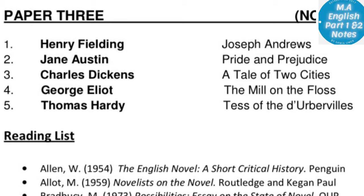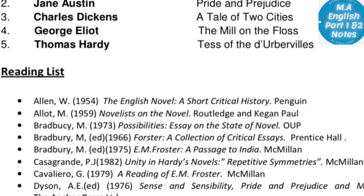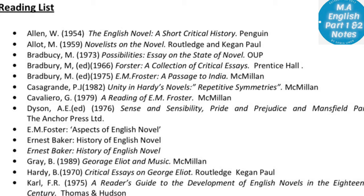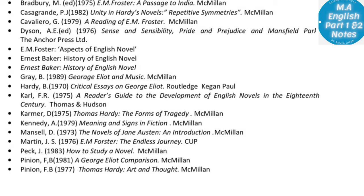The third paper is of Novel: Joseph Andrews by Henry Fielding, Pride and Prejudice by Jane Austen, A Tale of Two Cities by Charles Dickens, The Mill on the Floss by George Eliot, and Tess of the d'Urbervilles by Thomas Hardy. The reading list is given from which you can prepare. The more you read, the better your understanding. Also practice self-writing — the pattern is short questions and long questions.